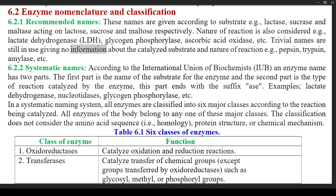Trivial names are still in use, giving no information about the catalyzed substrate and nature of reaction; examples include pepsin, trypsin, amylase, etc. 6.2.2 Systematic Names: According to the International Union of Biochemists (IUB), an enzyme name has two parts — the first part is the name of the substrate and the second is the type of reaction catalyzed, ending with the suffix '-ase.' In the systematic naming system, all enzymes are classified into six major classes according to the reaction being catalyzed. The classification does not consider amino acid sequence, protein structure, or chemical mechanism.